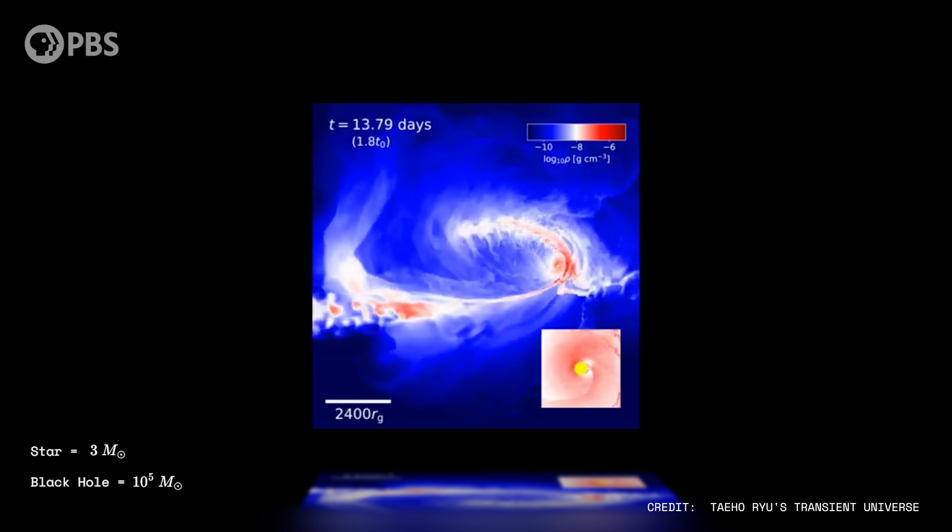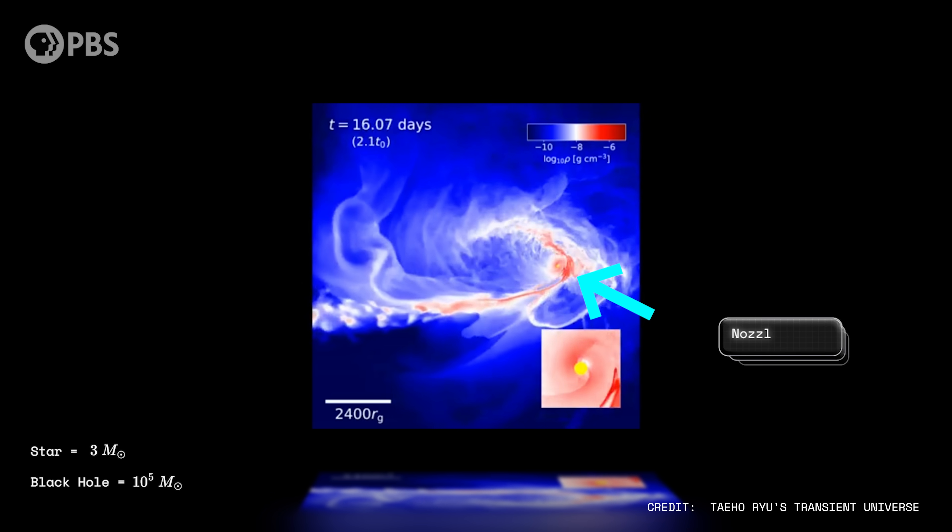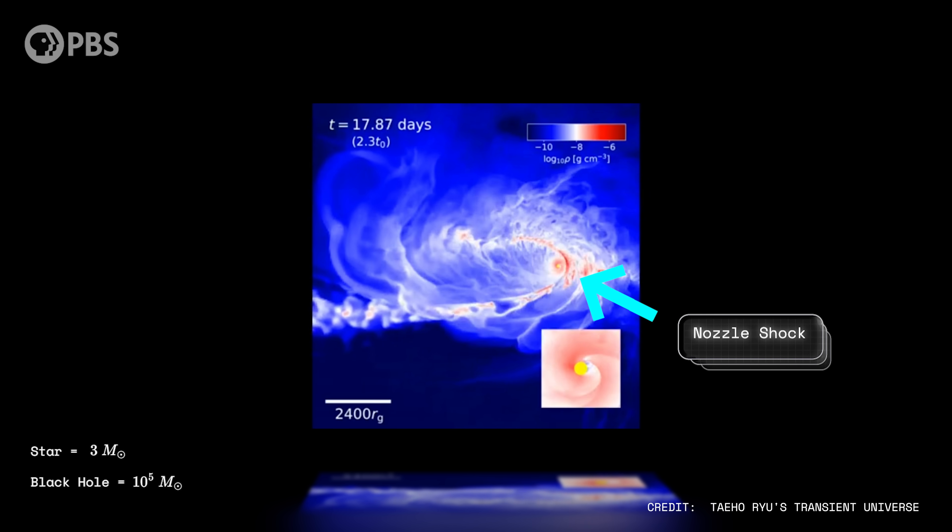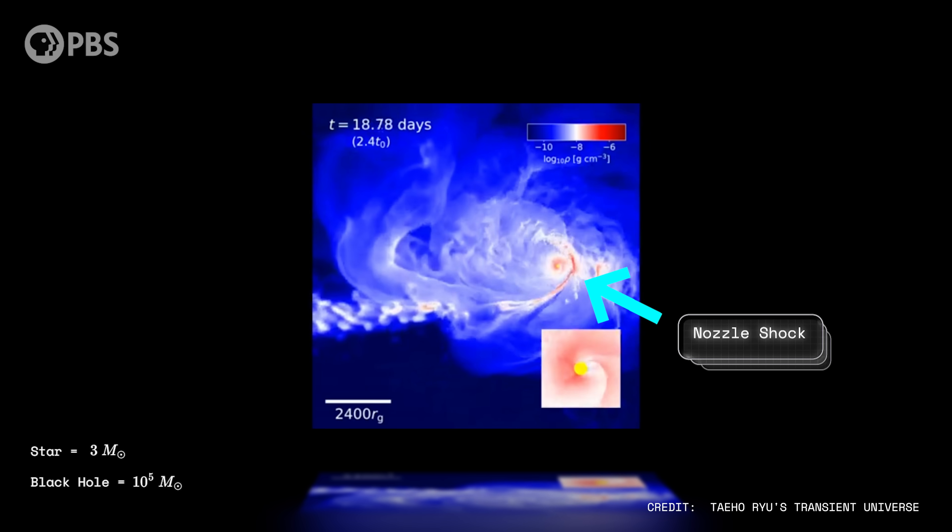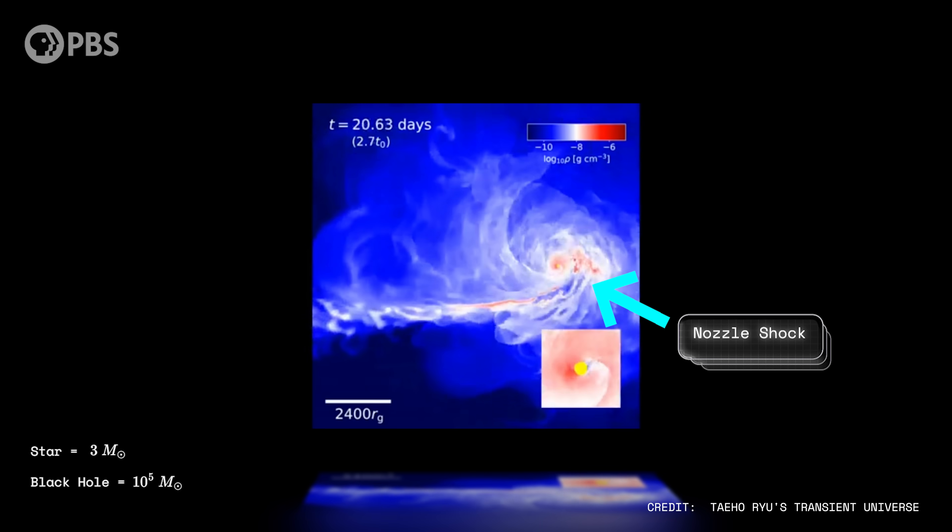An important feature of this orbit is the violent choke point at the closest point of the orbit. This choke point is called a nozzle shock, caused by the tremendous speeds that the stellar material attains. It's at this point that friction and turbulence and other forces in the stream of debris cause potentially observable flares of photons. A common TDE can be bright enough to outshine the entire surrounding galaxy, but it seems that the universe is capable of doing even better.